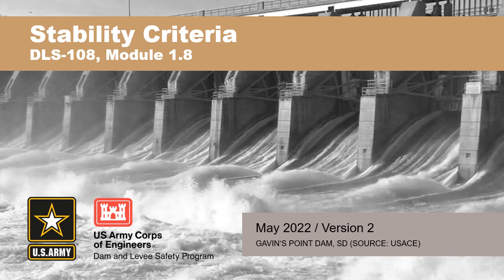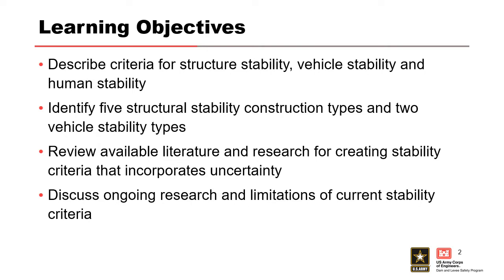We'll go ahead and jump into stability criteria. We're going to talk about the different types of stability we consider, which include structural stability, vehicular stability, and also human stability. We'll talk about five different construction types and two different vehicle types we consider specifically, as well as some of the limitations and special considerations.